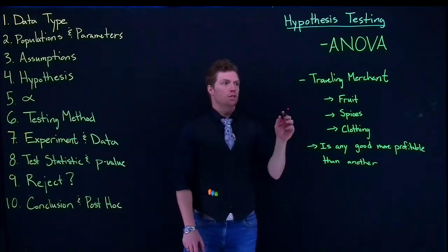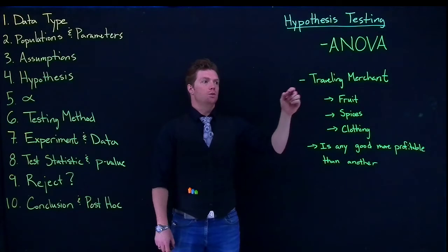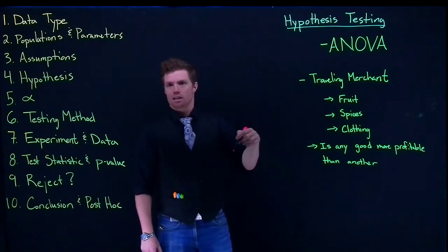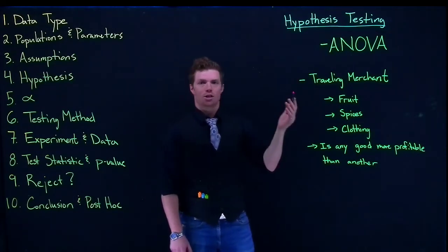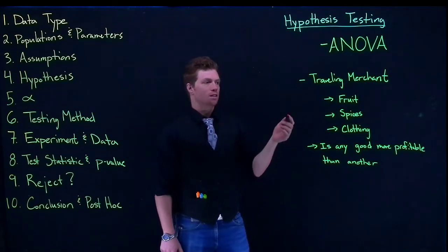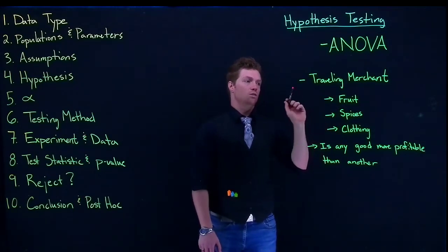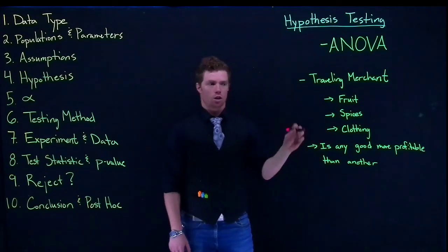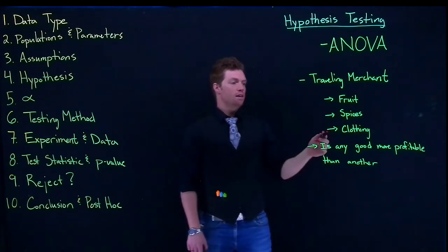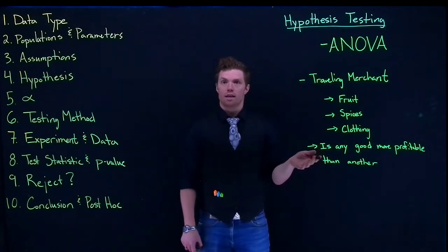What we are interested in in this scenario is suppose that you are some traveling merchant in Europe. You've got your cart, you go from city to city selling goods, and these are the three things that you sell: you sell fruit, you sell some spices, and you sell clothing. And you're wondering: is any of these goods more profitable than the other?